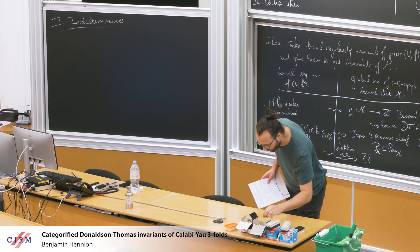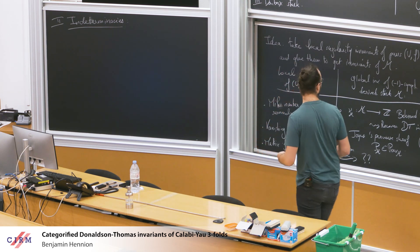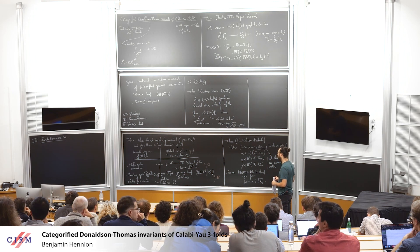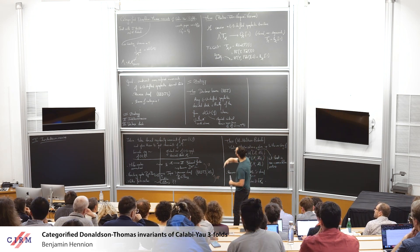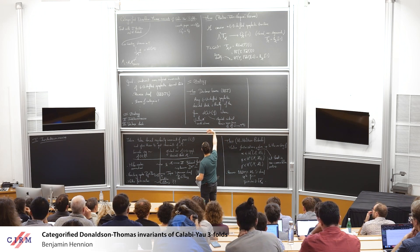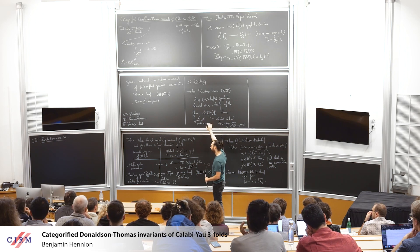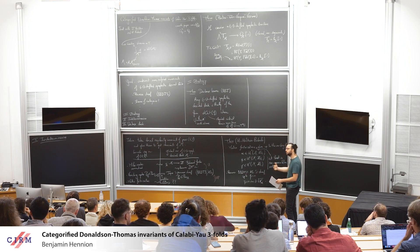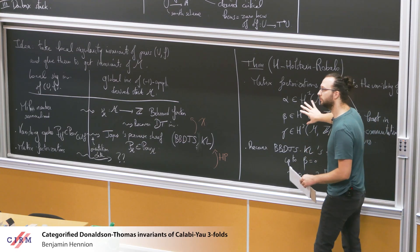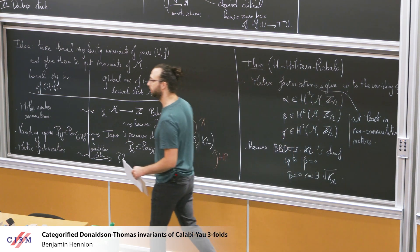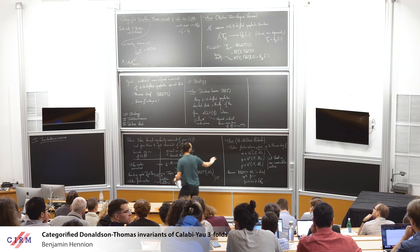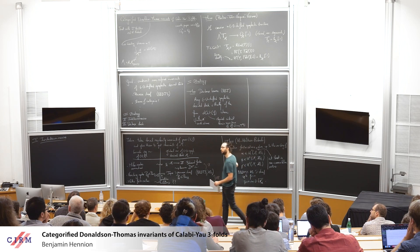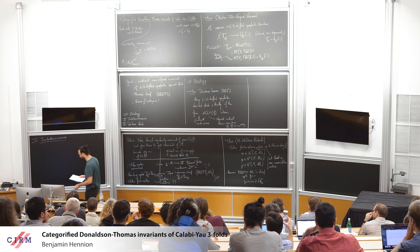For four-folds, what you get is a minus-two-shifted symplectic structure, and the local description is a bit more subtle. The strategy should also give you something, but I haven't looked at the specific obstruction classes you would get there. The local model is not just a function on something, so what you would put as matrix factorizations is not clear. I'm sure you can cook up something, but I haven't thought of it so much.